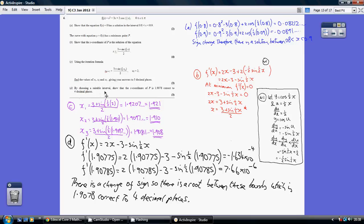Now for part d, by choosing a suitable interval, show that the x-coordinate of p is 1.9078 correct to 4 decimal places. So we use our GCSE skills and take our upper and lower bounds of what rounds to 1.9078 to 4 decimal places.